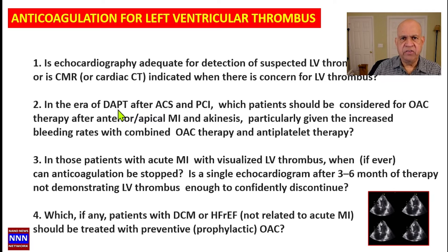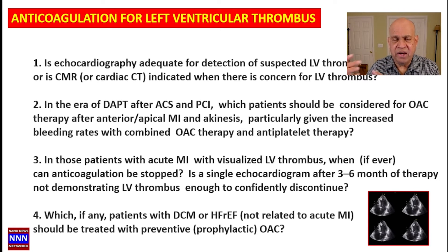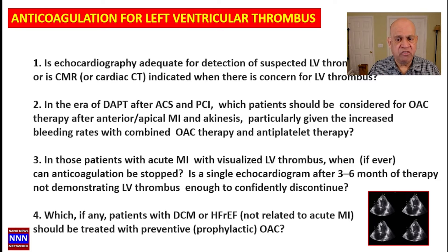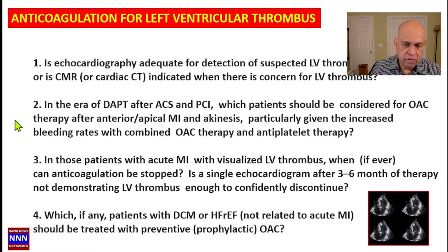The second key question concerns the era of dual antiplatelet therapy: for patients with acute coronary syndrome on PCI, since anteroseptal MI is the most common cause of LV thrombus, these patients are already on dual antiplatelet agents. If they are on dual antiplatelet agents, do we add a third agent on top of that to prevent embolization from the LV thrombus? That is something this article addresses.